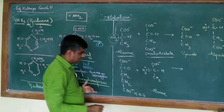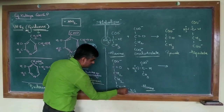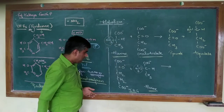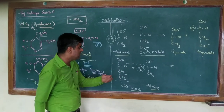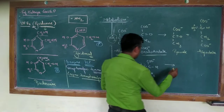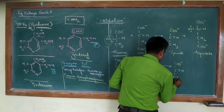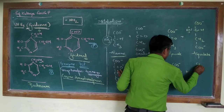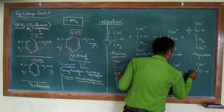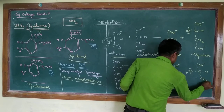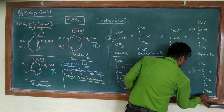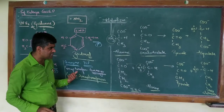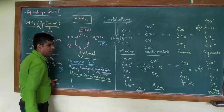Similarly, in another example, if alanine is the donor and α-ketoglutarate is the acceptor: alanine donates its amino group — pyridoxal phosphate accepts it — and alanine is converted to pyruvate. Then α-ketoglutarate accepts the amino group from pyridoxamine phosphate and is converted to glutamate. So the amino acid formed here is glutamate. Thus, this cofactor acts as a transient intermediate carrier of the amino group.